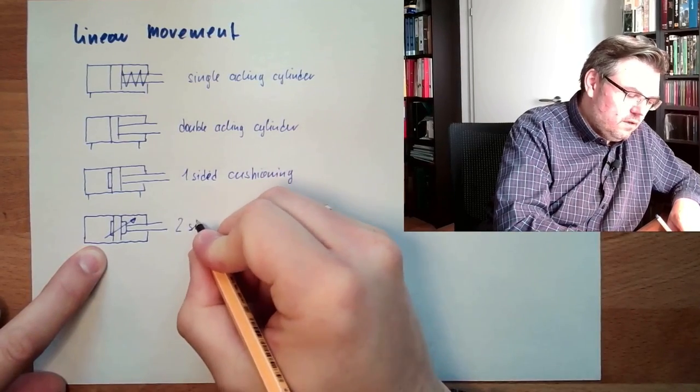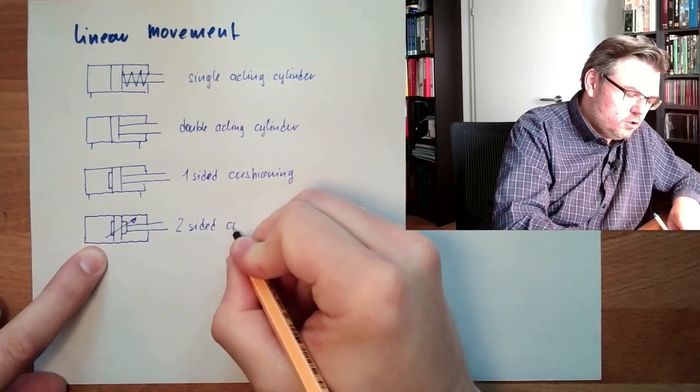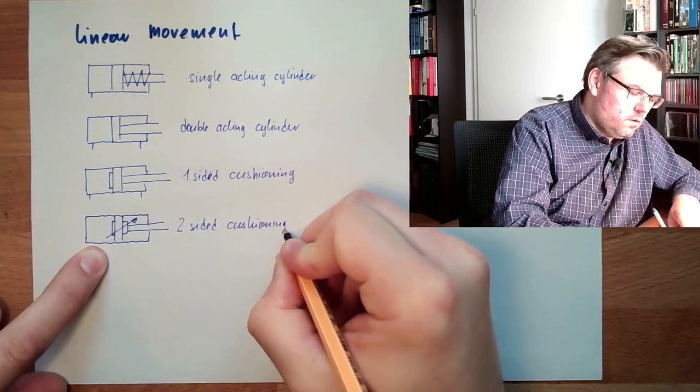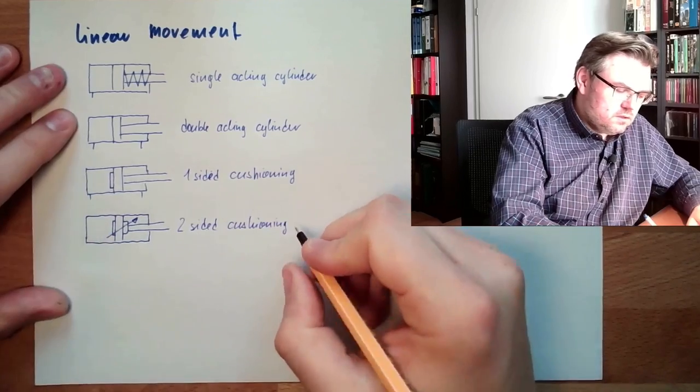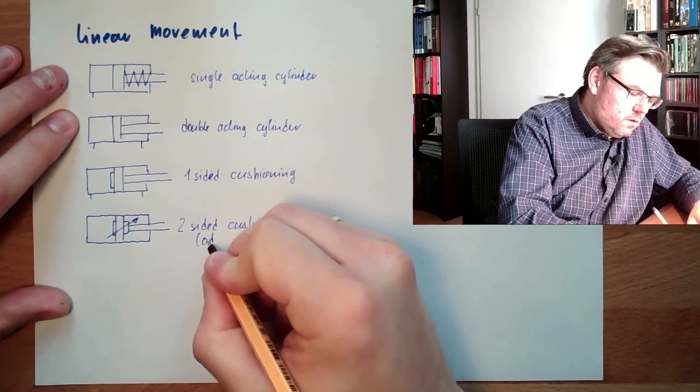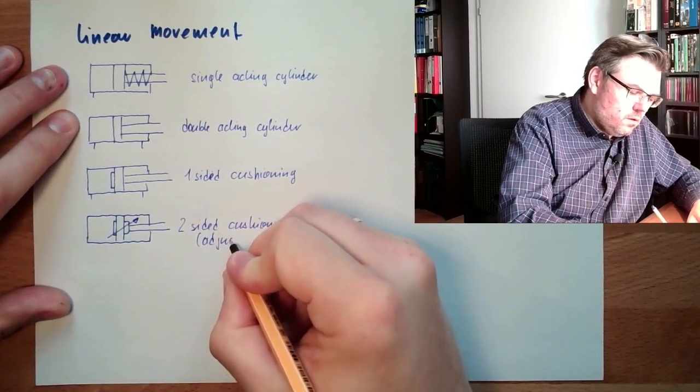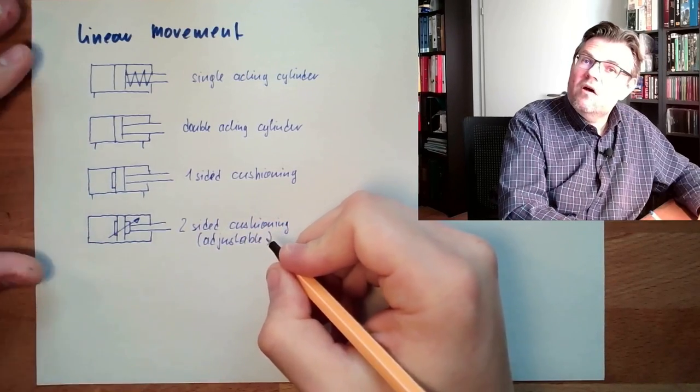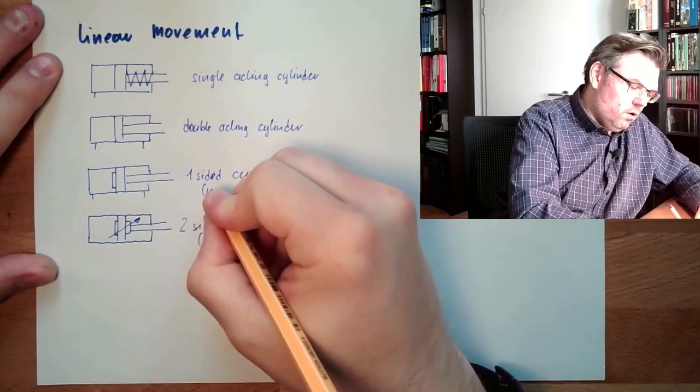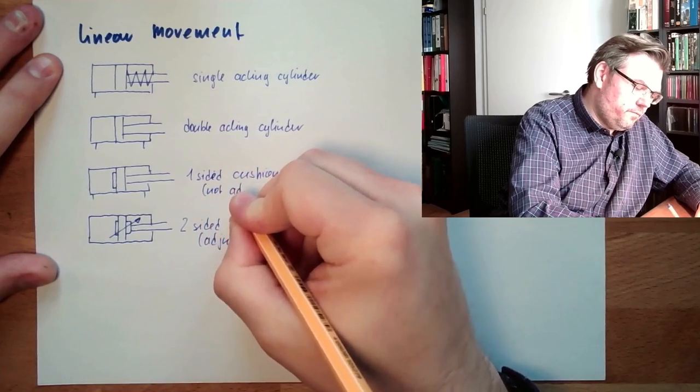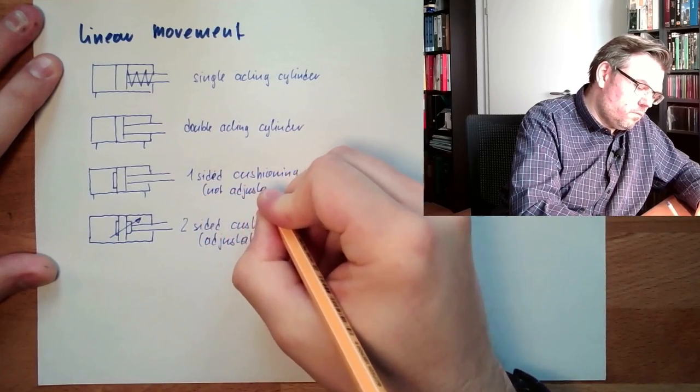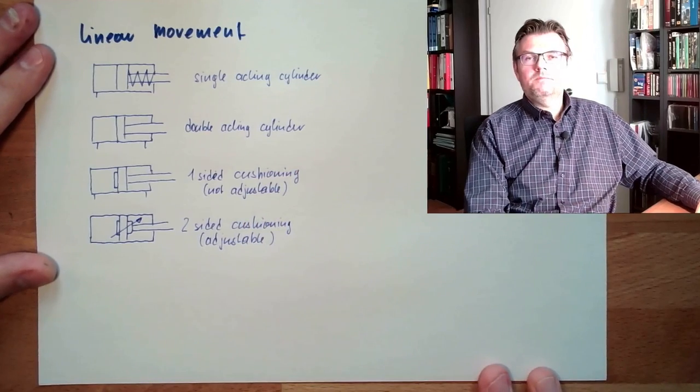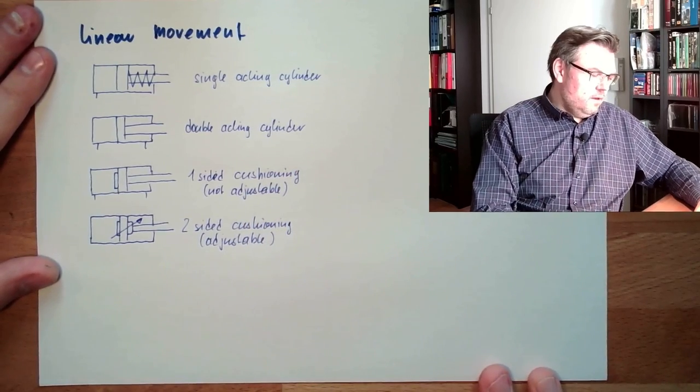This is two-sided cushioning. And even adjustable because, like usual with this little arrow. Not adjustable. And damping and cushioning.